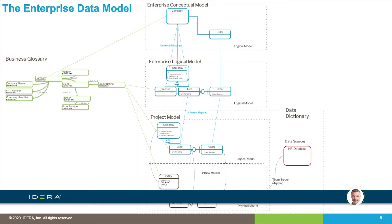We attach business terms into our data models. If we've got an enterprise data model, there should be a lot of semantic similarity between the business glossary and our enterprise data model. The business glossary doesn't really differentiate between entities and attributes — it just has business terms with relationships. The enterprise logical model has more rigor, and we use it to drive creation of new data models and bring together our understanding of different data assets.